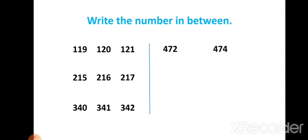Next example: here given two numbers, 472 and 474. The between number is missing. We have to write the between number. Which number comes here? 473 is the between number of 472 and 474.